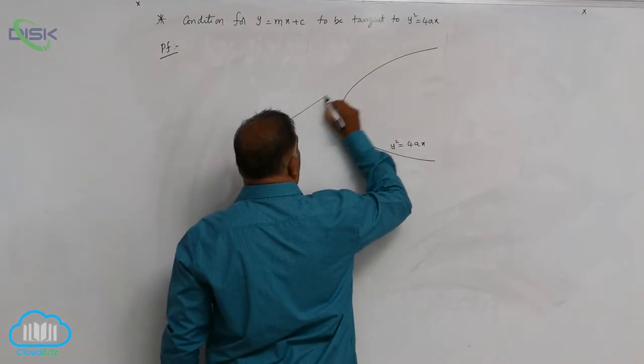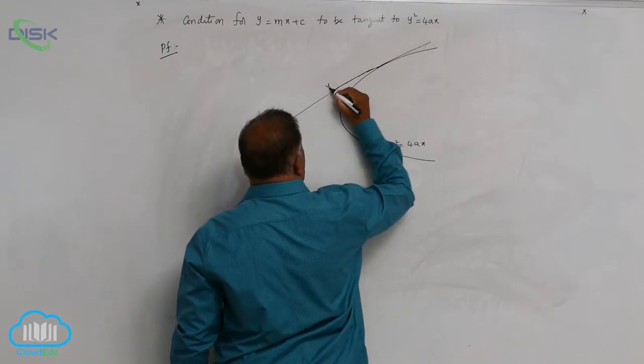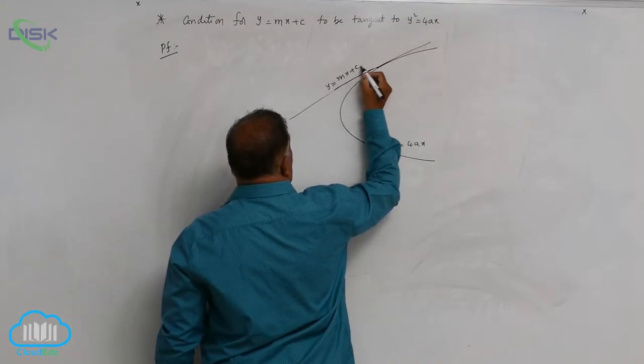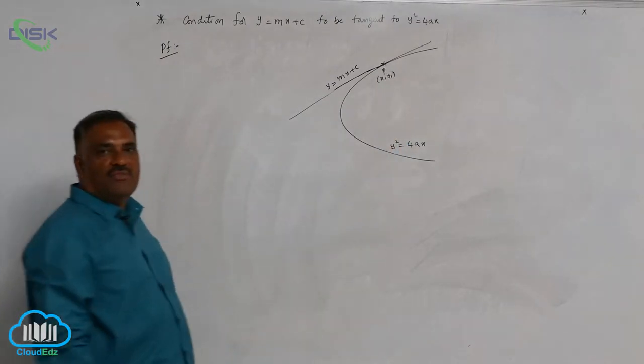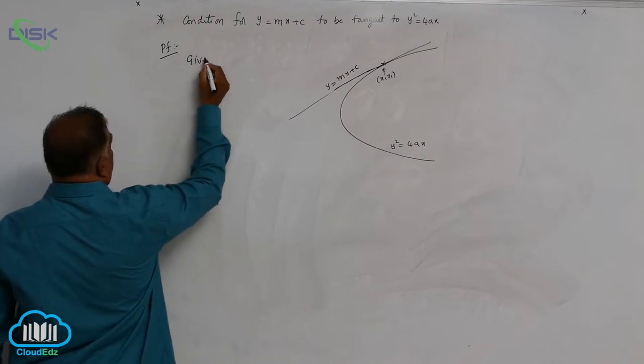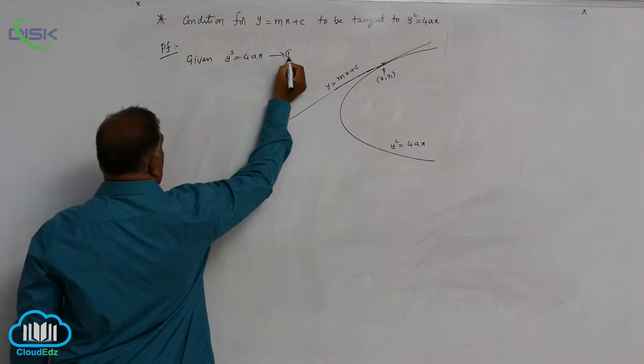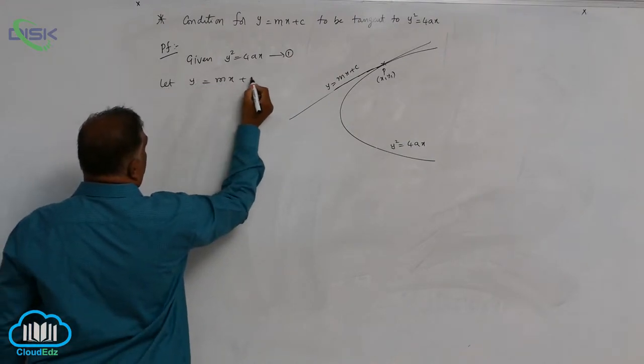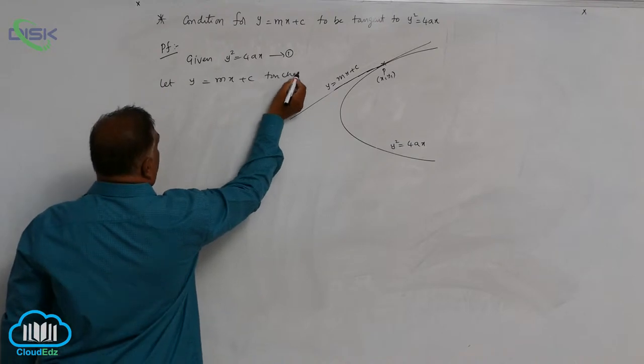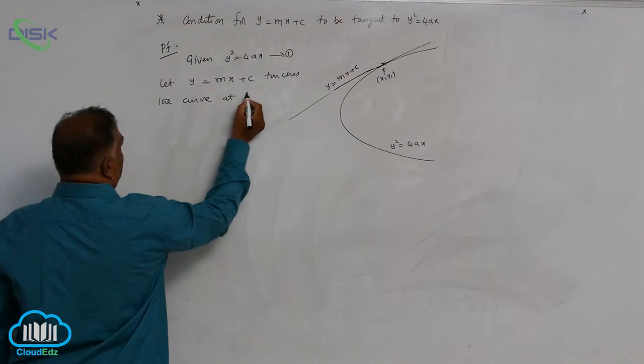The straight line y = mx + c touches the curve at point (x₁, y₁). Given parabola is y² = 4ax, equation 1. Let y = mx + c touch the curve at P(x₁, y₁).